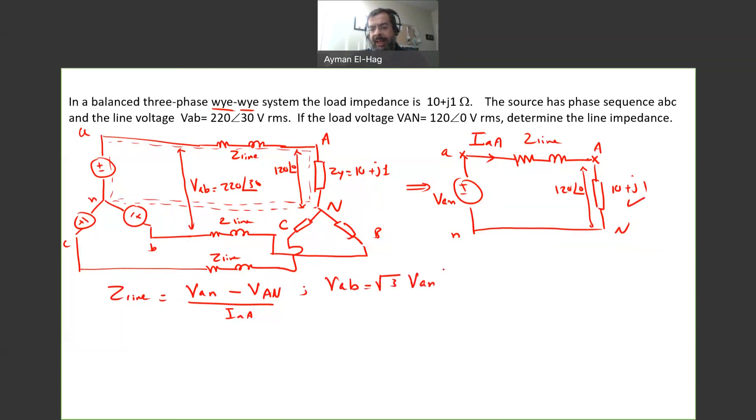From this, you can say that your VAN is your VAB divided by root 3, and you subtract minus 30. So this is how you find the phase voltage from the line voltage. Let's substitute here. Your VAN is equal to 220, angle of 30, divided by root 3, and you subtract 30. So this will give me the voltage VAN, which is equal to 127.02, and angle of 0. So now this VAN is known. This VAN is known.